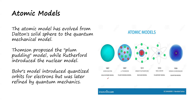So the next one is the Bohr model, which introduced quantized orbits for electrons, but was later refined by quantum mechanics. We have Niels Bohr, who came up with the planetary model. Then the next one is Schrödinger, who came up with the quantum model.